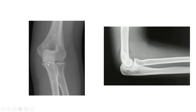In this joint we see that there are three bones: this is the lower end of the humerus, this is the upper end of the ulna, and this is the upper end of the radius.